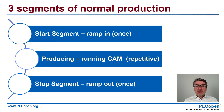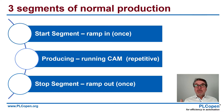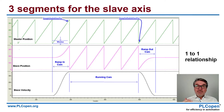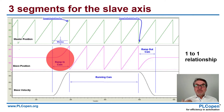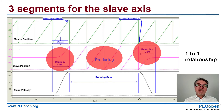So in a normal production, if there are no errors, you see that we have three segments: a start segment where we ramp in, a producing segment where we run the CAM in a repetitive mode, and somehow after so many cycles, we stop the production. From a timing perspective of the three segments, you see that we ramp in the slave to the master. It's a 360-degree cycle every time. We ramp in, we produce, and after so many cycles of production, we ramp out again. This is a one-to-one relationship — they're all going at the same pace.